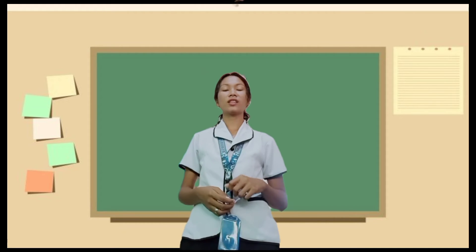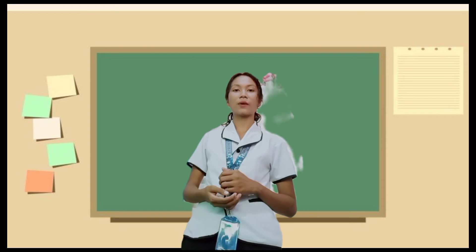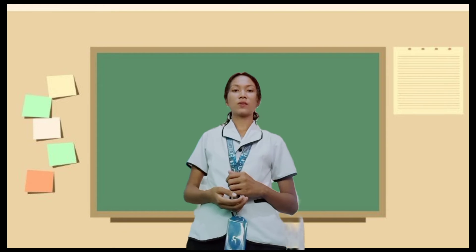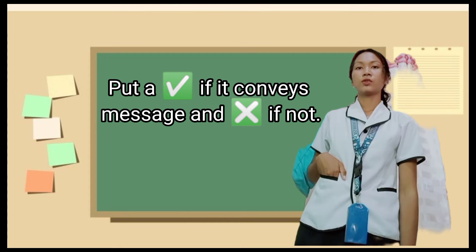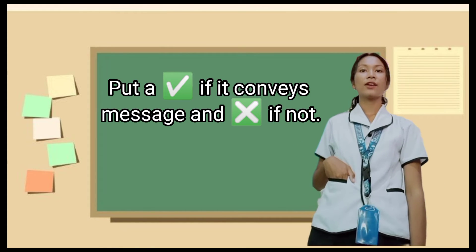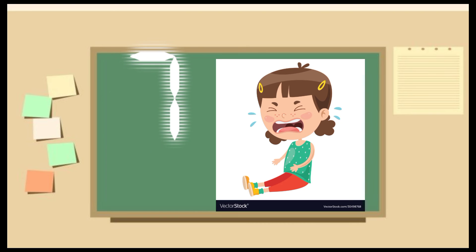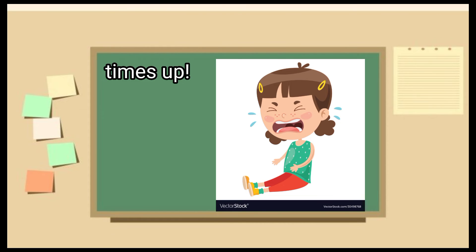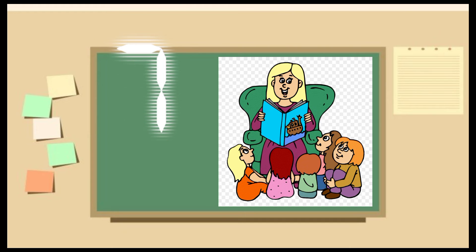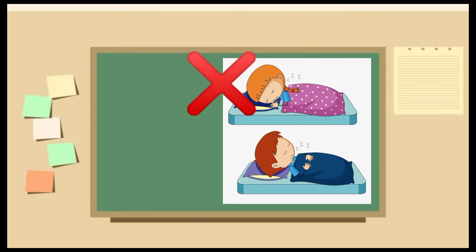That's all for our discussion. Now let's move on to your activity. This activity will measure your knowledge about our topic. Here are the directions: put a check if it conveys a message, and an X if it does not. Are you ready? Let's start. Congratulations! You understand the lesson.